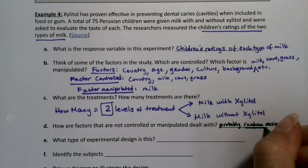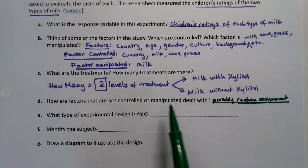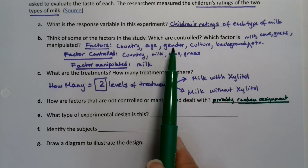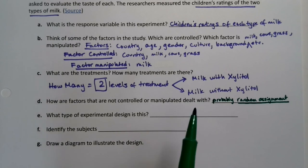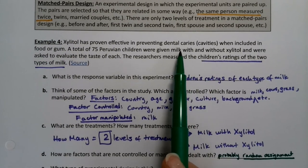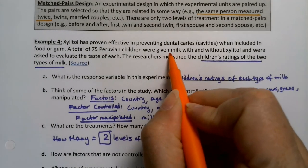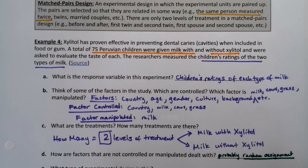Because otherwise, if you get all the kids from the same area or the same background, that's not really great. With random assignment, you're going to get random ages, random genders, et cetera — an even split of male and female, for example. This is a matched pairs design because they're having the same kids drink both milk with and milk without xylitol. It's the same children, so that is matched pairs — it's a before and after thing.